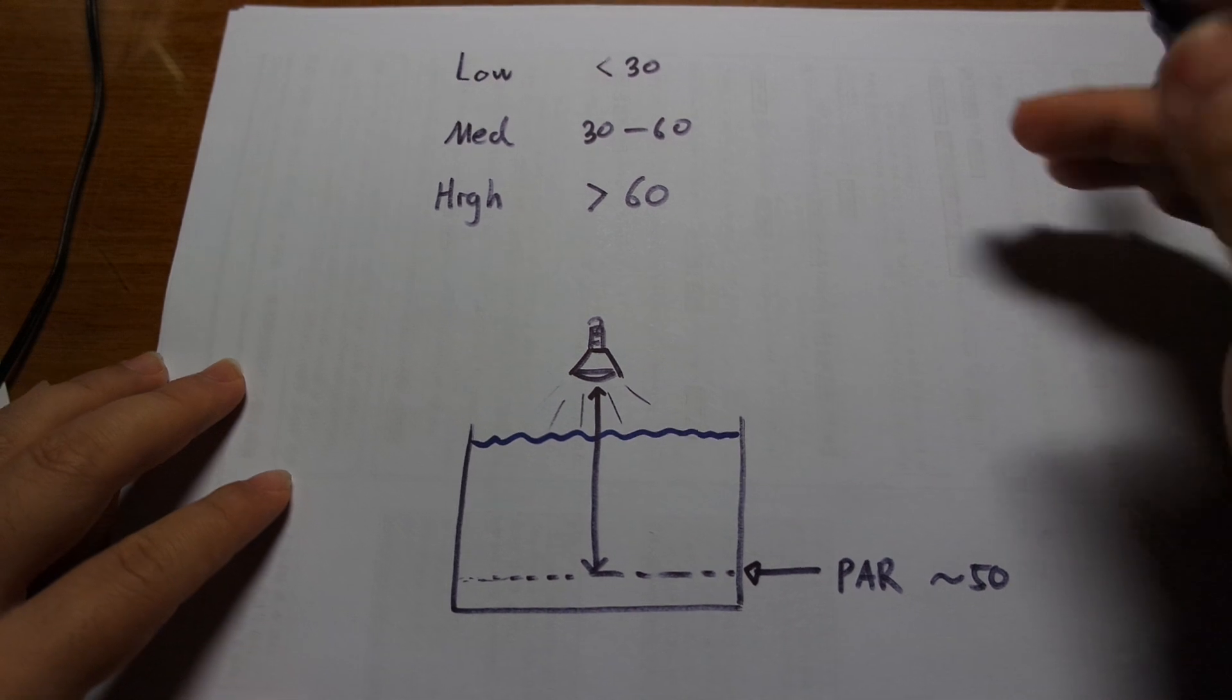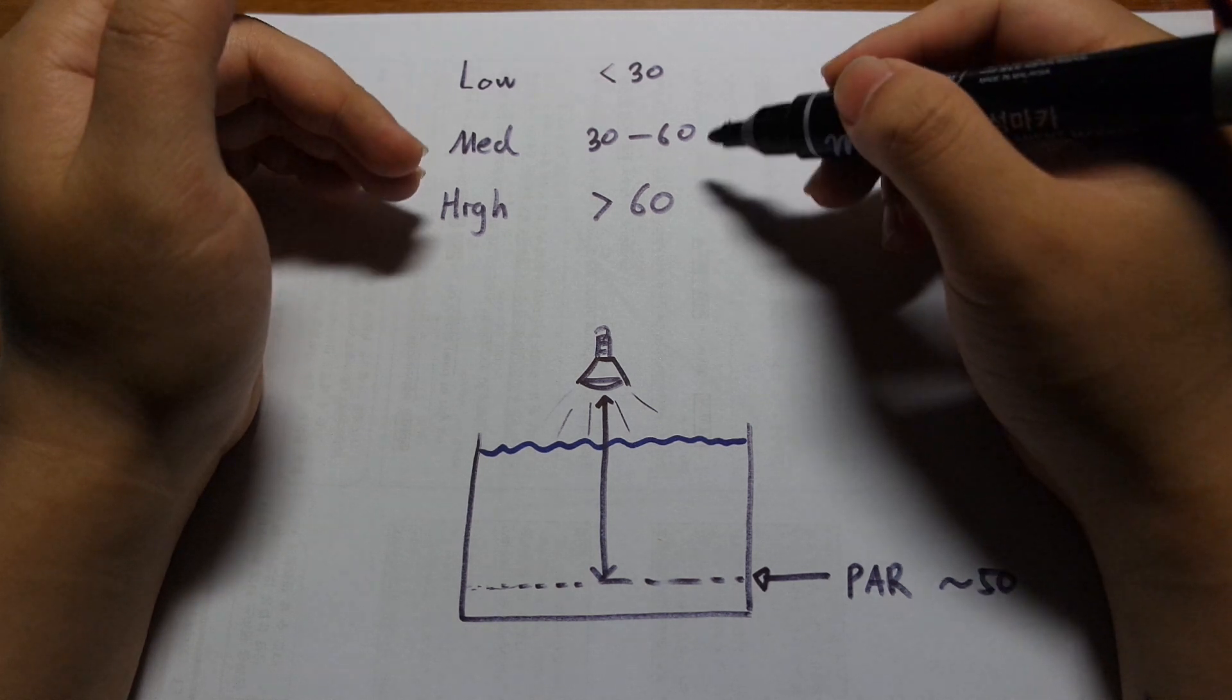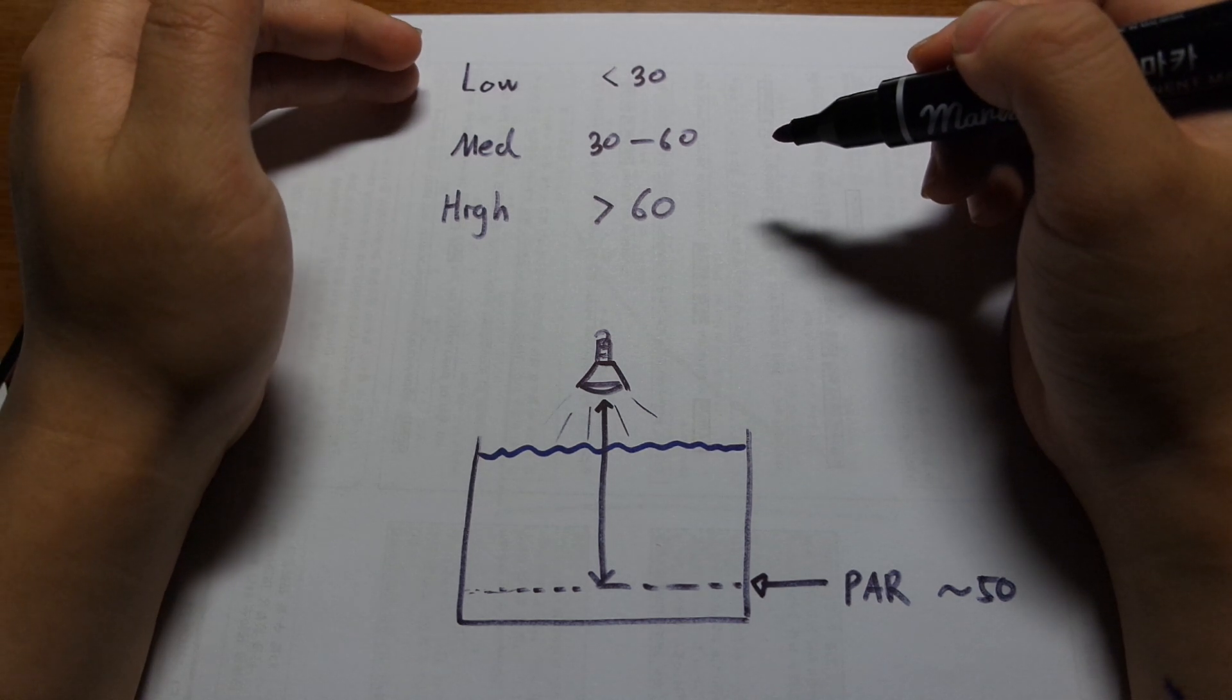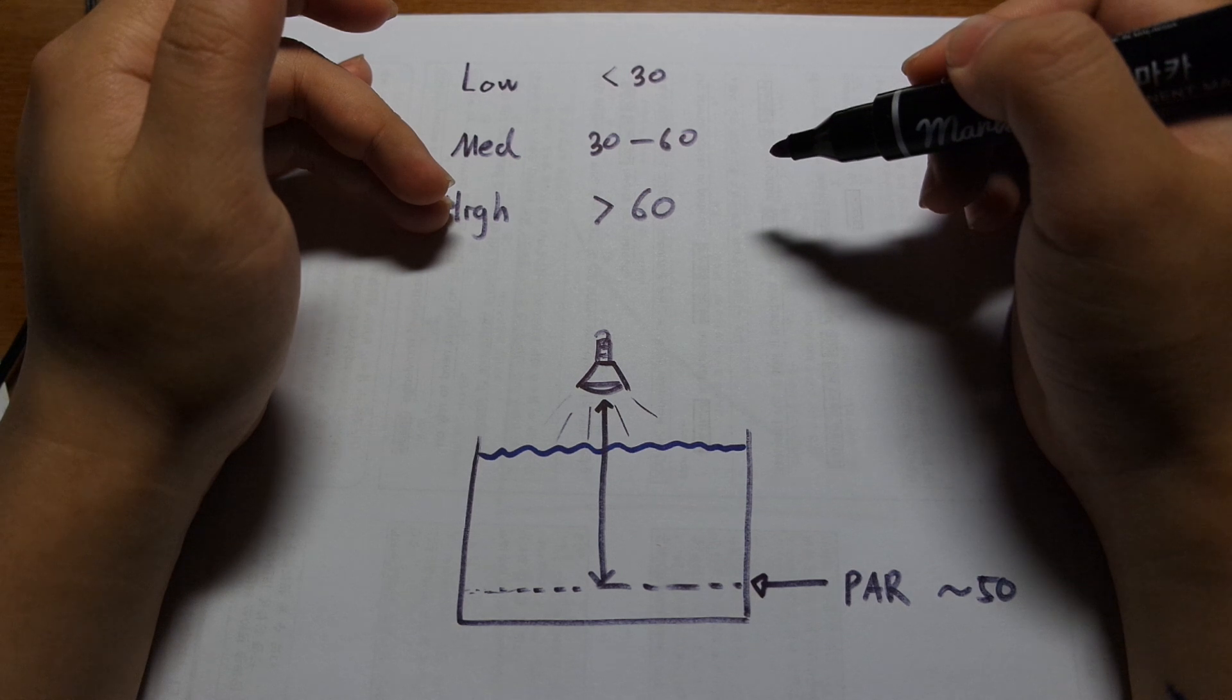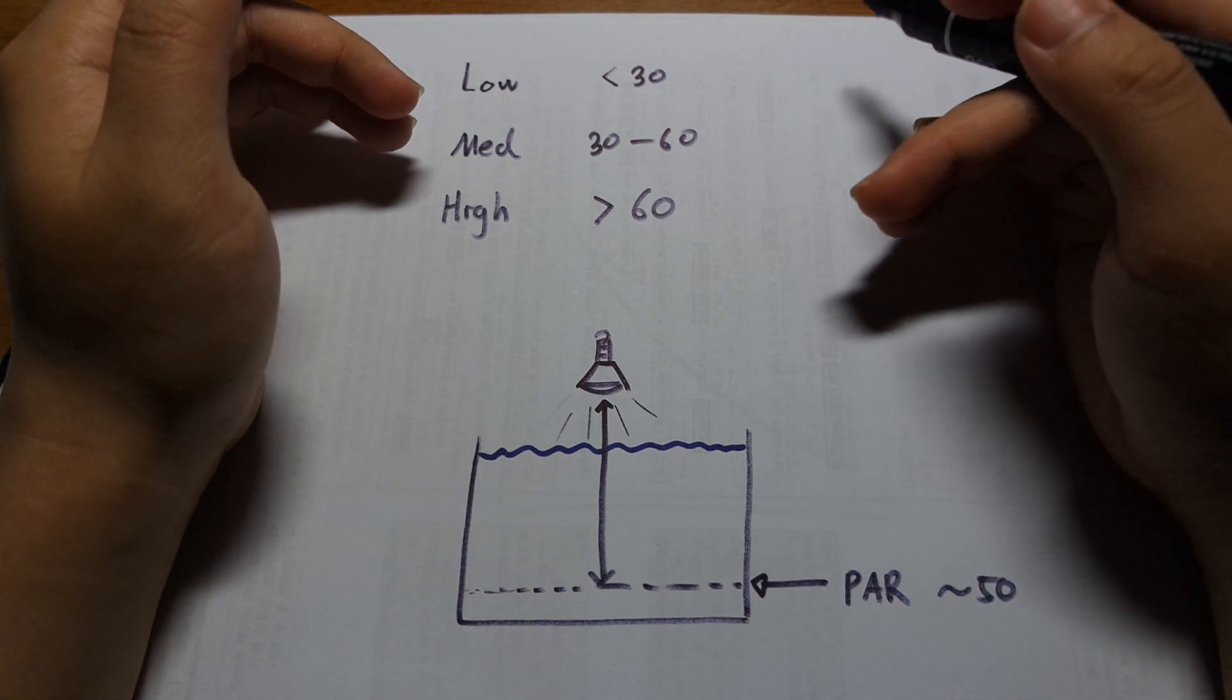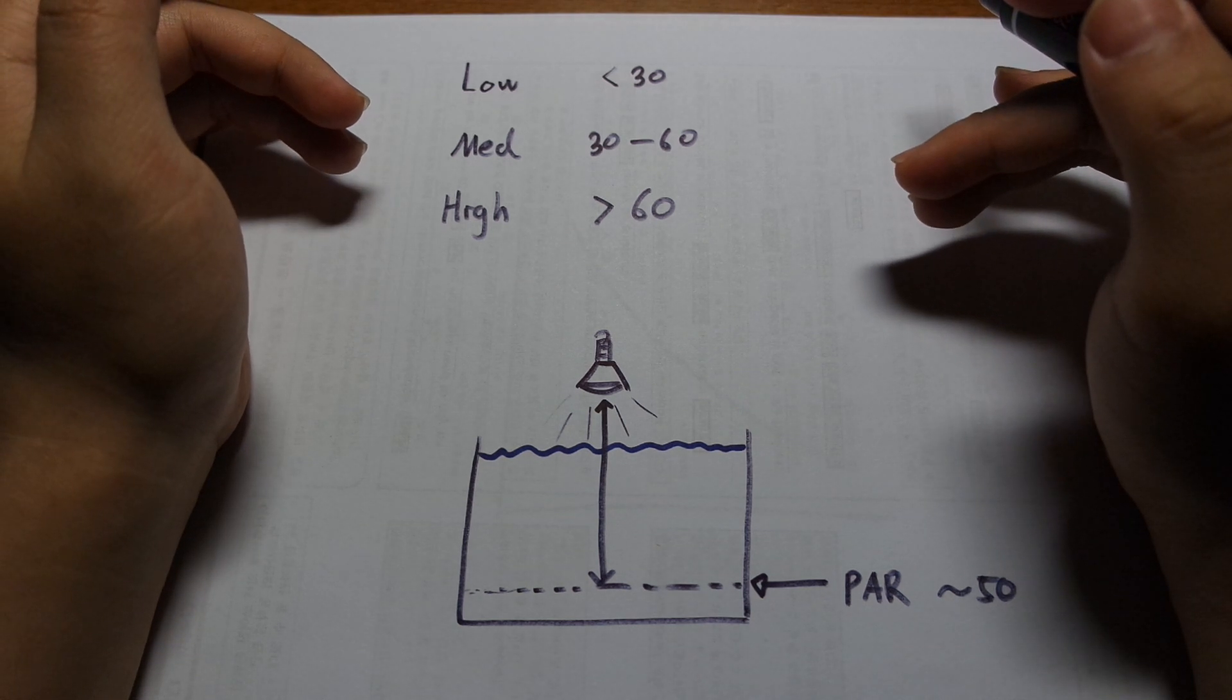So there is no exact like you need this much PAR to grow plants. This is just like a general consensus that is derived over years of anecdotal experience. Low PAR is like something around 30. Medium is around 30 to 60. High is about like greater than 60. Depending on who you ask, they will give you different numbers. But this is approximately like how much PAR is considered a high, medium or low. So as long as you're something around 50 PAR, you should usually be fine.